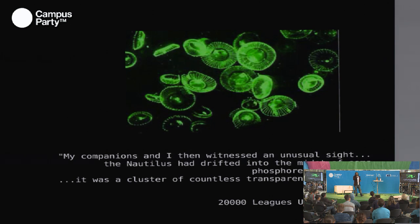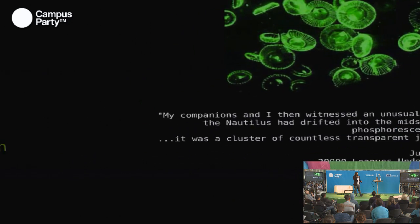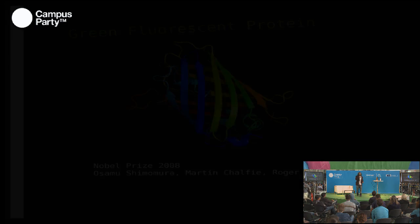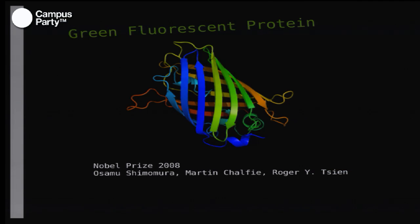Some scientists — who won the Nobel Prize for this — were able to isolate the protein that makes this light. Now you can take that piece of genome, insert it into the genome of the zebrafish, and when you illuminate it with light, the zebrafish will be fluorescent.